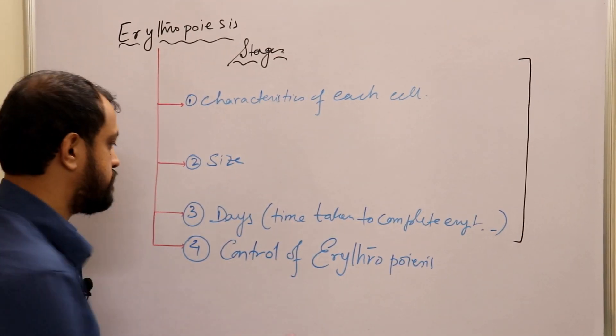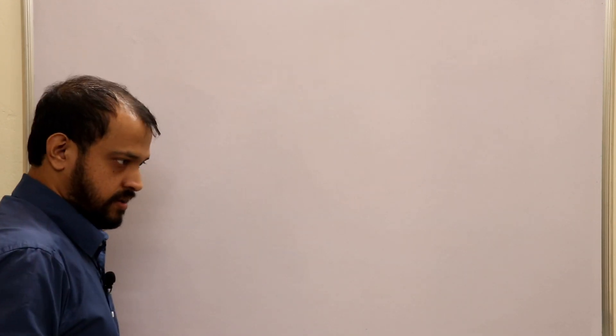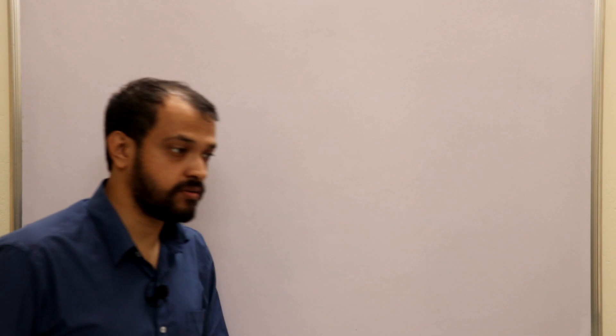Now let us talk about erythropoiesis with respect to these three things. Do not mug up these things — if you mug up, you will never understand. The mother of every subject is actually physics. We will talk about the basic process and the staining, and how each cell looks in an H&E stain. We will talk about each cell developed during the erythropoietic stage and its structure under a microscope using hematoxylin and eosin stain.